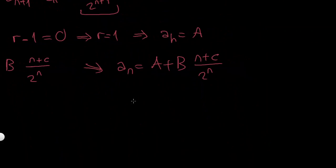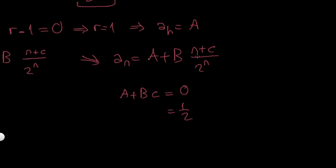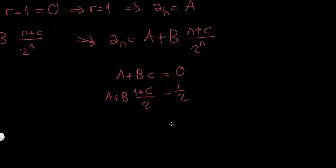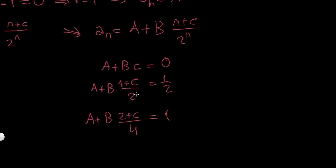Now I use these initial values. For n=0: a plus b·c equals 0. For n=1: a plus b·(1+c) over 2 equals 1/2. For n=2: a plus b·(2+c) over 4 equals 1. Subtracting the first equation from the second, the a's cancel and I get b·(1+c)/2 minus b·c equals 1/2.